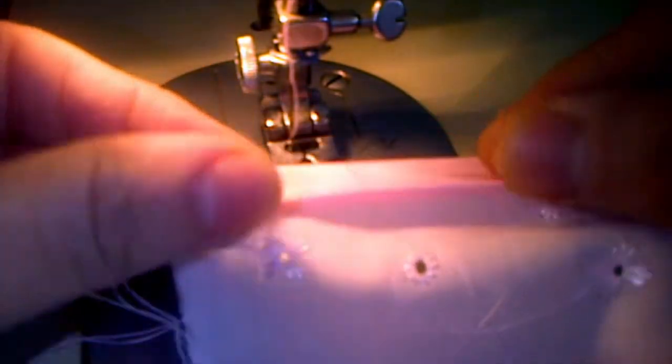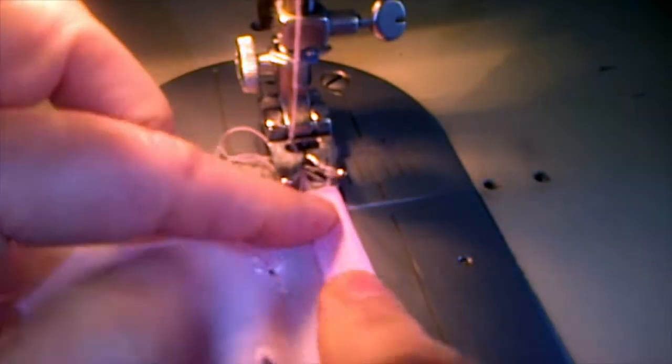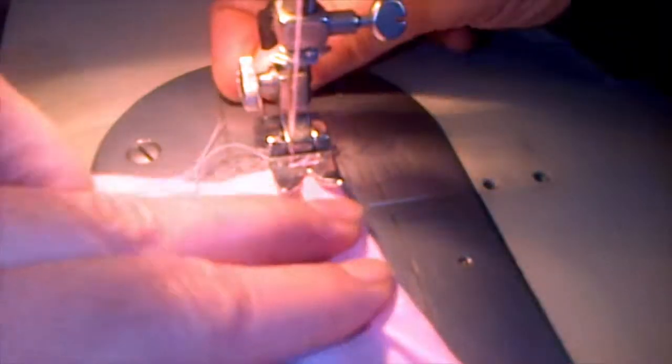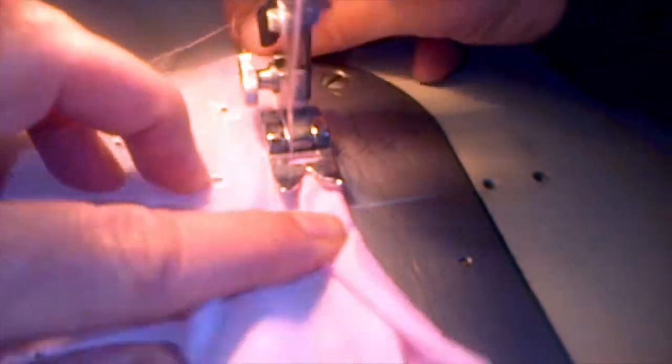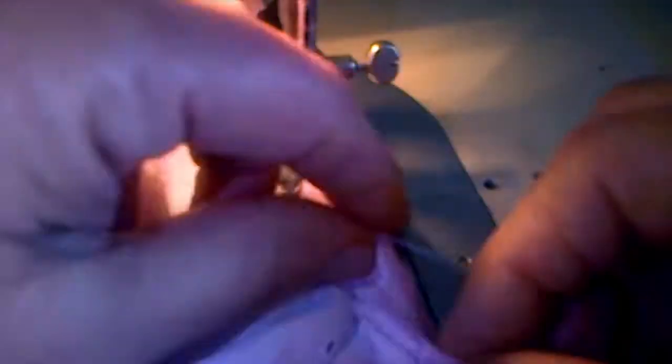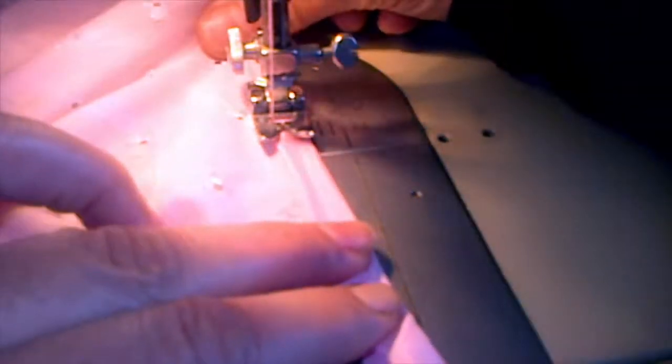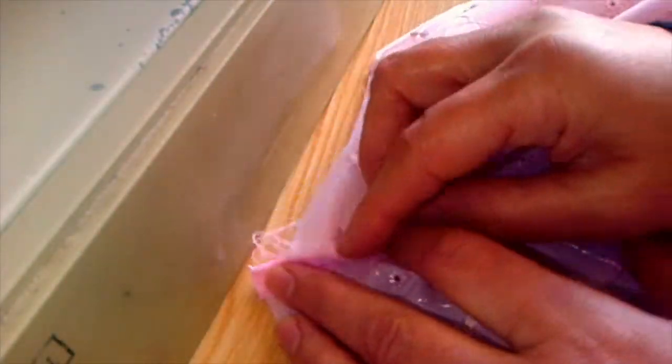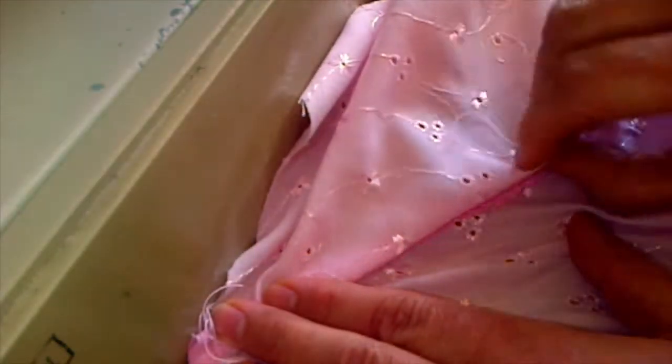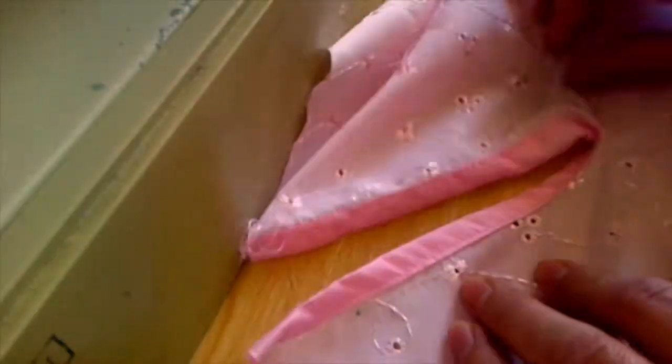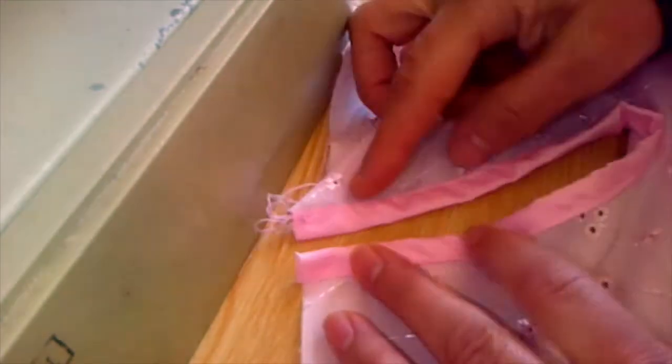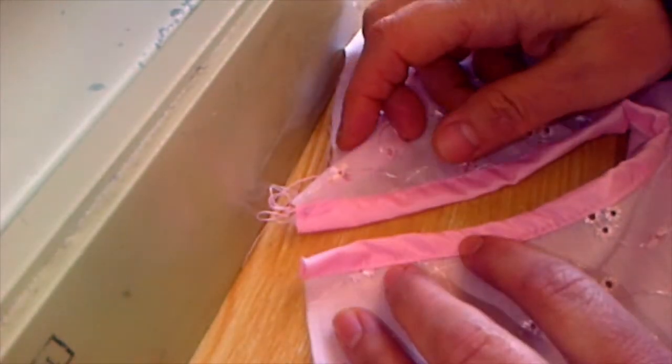Now double fold it toward the right side and run a stitch. If you want you can set it like this and attach a button at the top, but I'm attaching a button loop here and we'll keep it open like this.